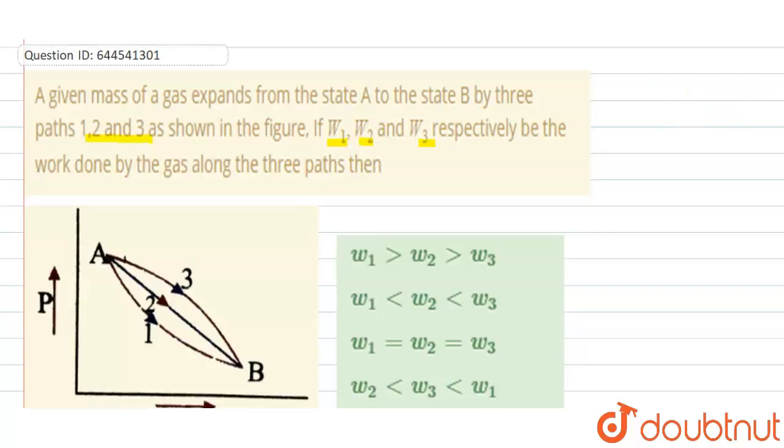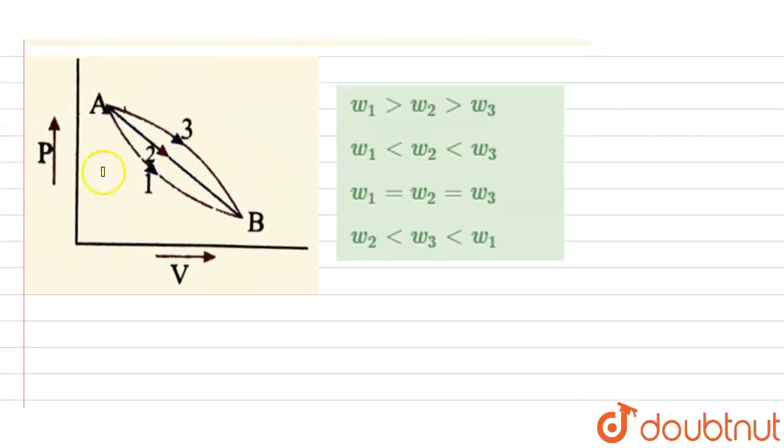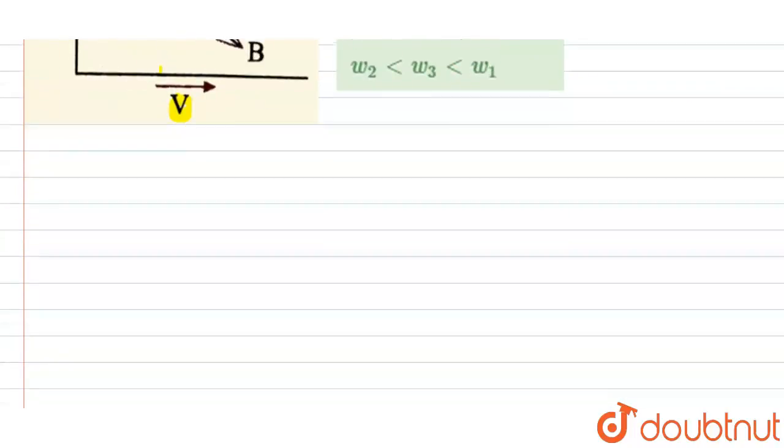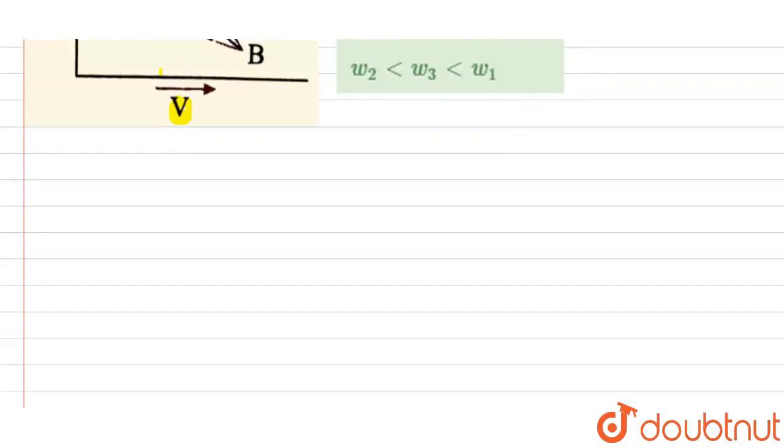then we need to find out the correct order of the work done. So, this graph is between P and V. This curve is drawn between the P versus V graph.